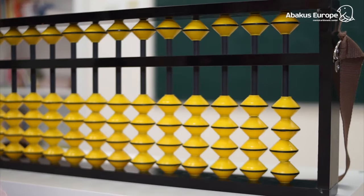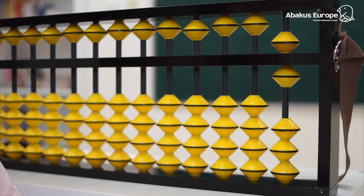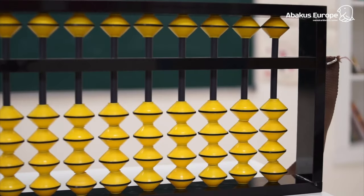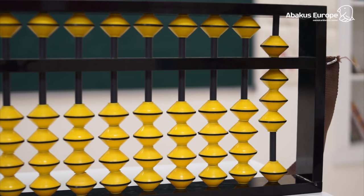To make the number six, you need to move the upper and one lower bead, and to make the number seven, the upper and two lower. We make the number eight on the abacus using the three lower beads and the upper bead, and to make the number nine, you need to use all the beads on the first rod.